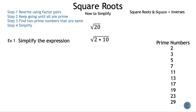Now we have the square root of 2 times 10 underneath the square root sign. Let's find a factor pair of 10. We bring down the prime number we already have, the 2. The factor pair of 10 we'll use is 2 and 5 — since 10 is even, we divide by 2 and get 5. Now we have the square root of 2 times 2 times 5. Let's find two numbers that are the same: we have two 2's, so we circle them and write them as 2 squared. Now let's bring down the 5.